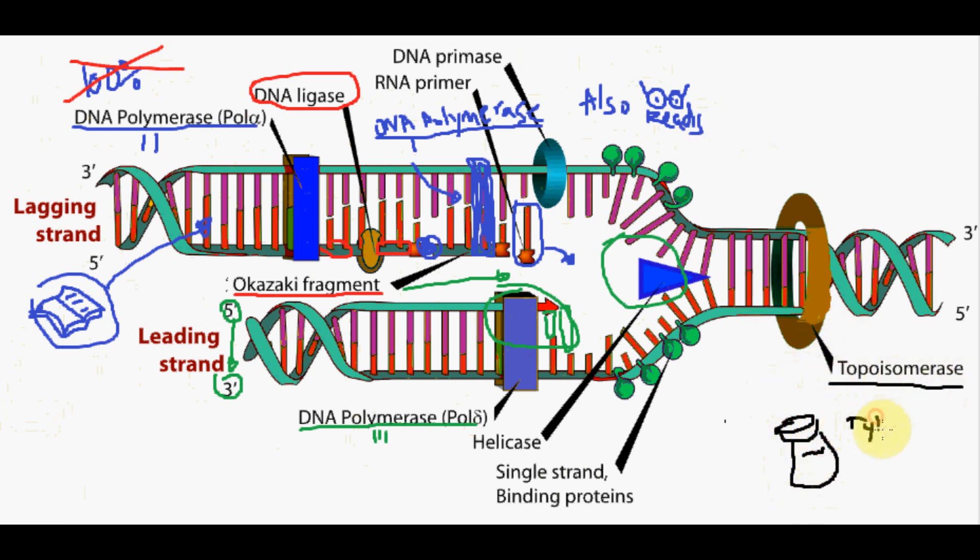Topoisomerase 2 acts as a pain reliever, relieving the strain created by the unwinding of the parent DNA in the double helix. This regulates the winding of DNA so that it does not overwind or underwind.